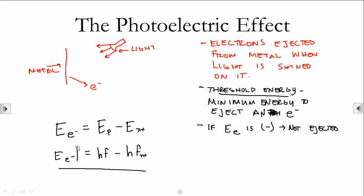Using this, we can again find the energy of the ejected electron. So I'm going to go ahead and label these. That's the electron energy. That is the photon energy. And this is the threshold energy.